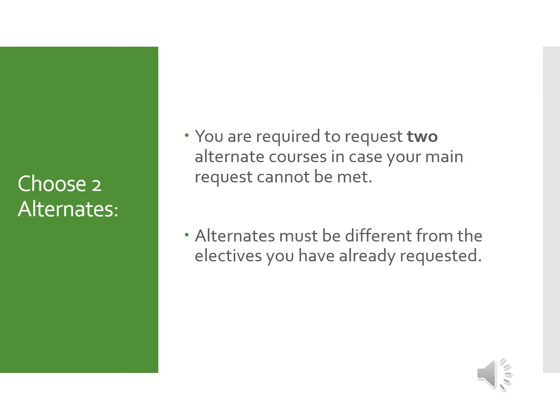Students are also required to add two alternate courses to their primary requests. These alternates must be different from the electives you've already requested — every year some students put the same ones, so be careful. The reason for alternates is that we cannot guarantee your first choice of courses, and if we don't have alternates, we may have to assign courses we think you might like. Please make sure you are genuinely interested in the alternates you choose, because you may receive them.